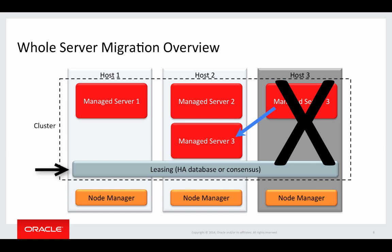There's also a leasing system that servers use to communicate their health to the migration infrastructure. After you start a server, the servers are granted a lease to run. They each update their lease periodically. The leasing system can be in memory — we call that consensus leasing, and that's what I'll use in the demo — or it can be in a highly available database. So here's how the whole thing works. Periodically, servers update their leases. When a number of lease updates are missed, the system considers that server to be defunct. Even if the server is running, if it can't update its lease, it will shut itself down to prevent conflicts. From there, the migration infrastructure grants a lease to another host in the system and calls the node manager on that host to restart the managed server.